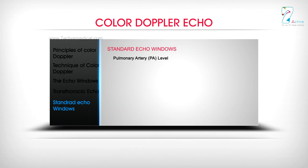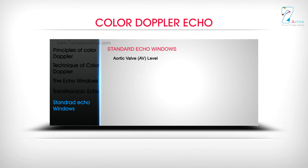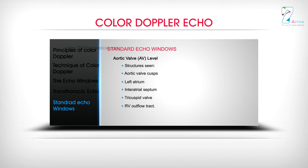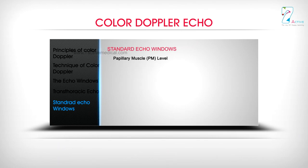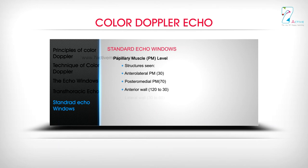At the pulmonary artery level, structures seen include the pulmonary artery, pulmonary valve, and RV outflow tract. At the aortic valve level, structures include the aortic valve cusps, left atrium, interatrial septum, tricuspid valve, and RV outflow tract. At the mitral valve level, the mitral valve orifice and ventricular septum are seen. At the papillary muscle level, the anterolateral PM (at 30°) and posteromedial PM (at 70°) are identified, along with anterior, lateral, and inferior wall segments.